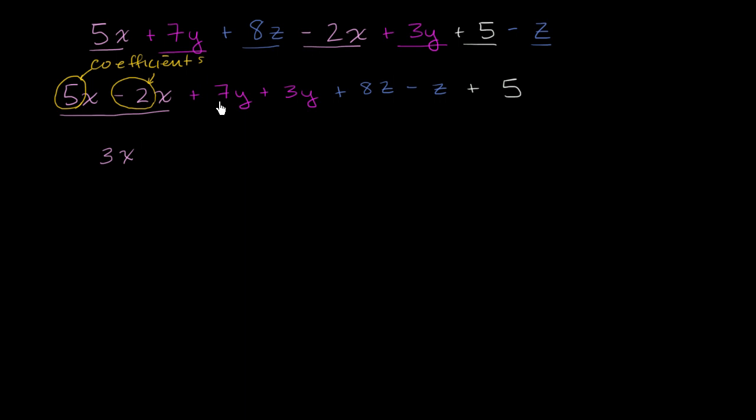Now let's think about the y's. If I have 7 of something and I were to add 3 more of that something, well then I'm going to have 10 of that something. So this part right over here is going to simplify to 10y.